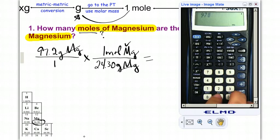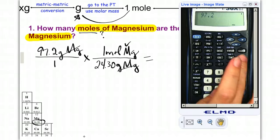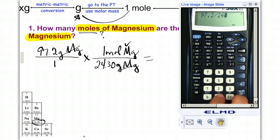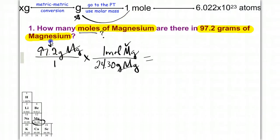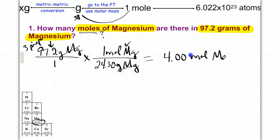Now we get our answer. We type in 97.2 divided by 24.30, which gives us 4. We have to have our answer in the correct significant figures — this given is 3 sig figs, so my answer should also be 3 sig figs: 4.00 moles of magnesium.